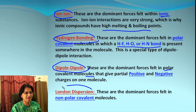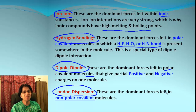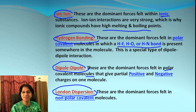The last type of IMF is London dispersion, and this is present in all non-polar covalent molecules. Also, every molecule is capable of having London dispersion, and along with that, it may have some other dominant IMF present.